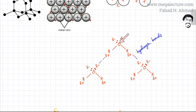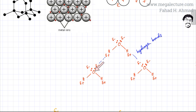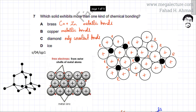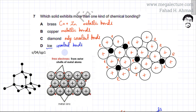In water there are two types of attractive forces: covalent bonds between oxygen and hydrogen within the water molecule, and hydrogen bonds between one water molecule and another. So there are two types of bonding present in ice. Going back to the question — which solid exhibits more than one kind of chemical bonding — the answer is ice, making option D the correct answer.